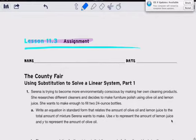She's researched different cleaners and decided to make furniture polish using olive oil and lemon juice. She wants to make two 24-ounce bottles, so two 24-ounce bottles equals 48 ounces altogether.